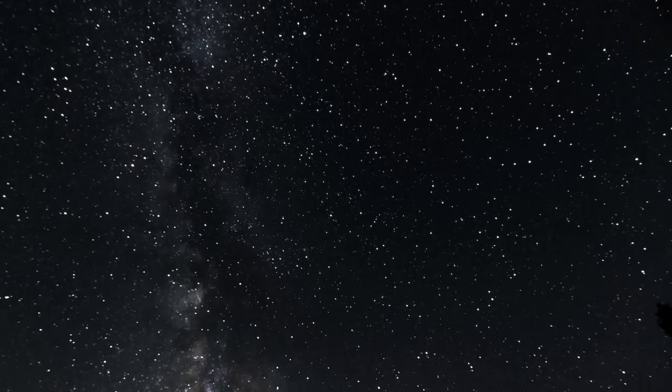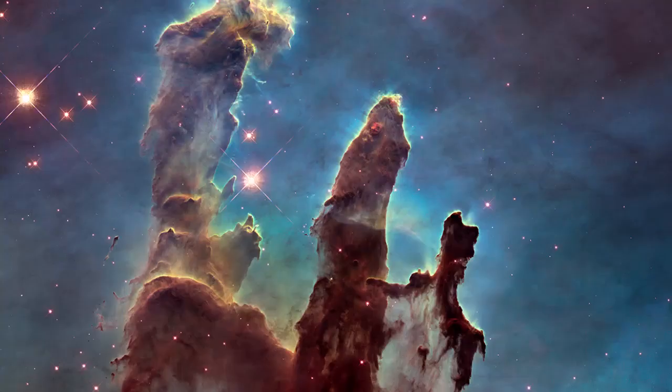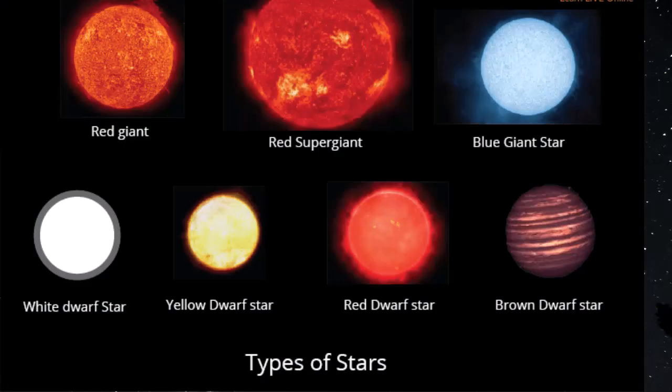The birthplace of stars are the huge nebulae made of dust particles and gases. Generally, the surface temperature of stars ranges from 3,500 degrees Celsius to 50,000 degrees Celsius. The color of stars changes according to their temperature.